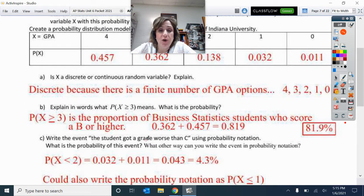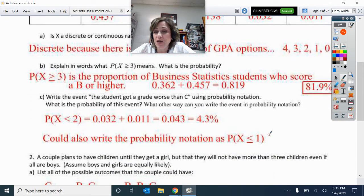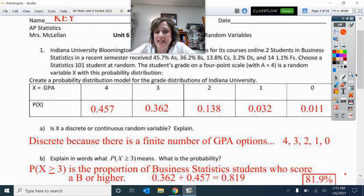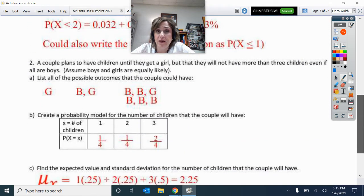Write the event a student got a grade C or worse. So that's a two point scale or worse. You could say P of X is less than two. And so that's how you would do that notation. We've got this adding those two together, and then we have four point three percent. But you also could write it less than or equal to one, because it's worse than a C. So that is these two sections, a D or an F.